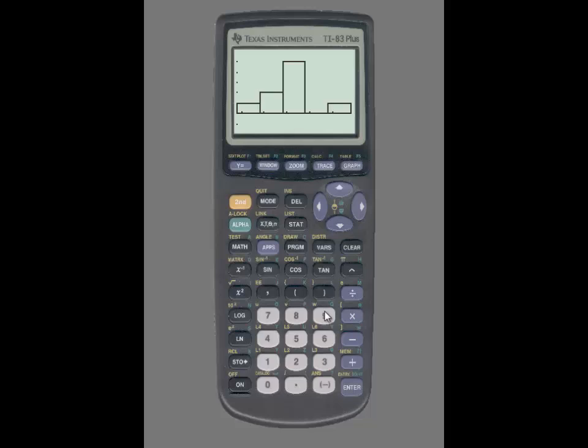To construct a box plot, we'll return to the STAT PLOT function, so we'll press the second key and then the Y= button and select number one. Since the plot is already on, we won't need to do that again. We'll use the down arrow key to go to Type and then use the right arrow key to access the box plot, which is the fifth graph. Again, we'll press Enter so that we can highlight the box plot.